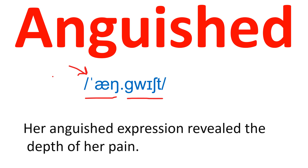Anguished. It's a two-syllable word and the stress is on the first syllable. As you can notice in the phonemic script, the word is not ending with a D sound — it's ending with a TH sound, as in 'teen.' If you want to learn in detail why some ED-ending words end with a TH sound, you can see my video where I explain ED endings. The reason is: if the consonant before ED is unvoiced, the ending sound will be TH — 'anguished.' Example sentence: Her anguished expression revealed the depth of her pain.